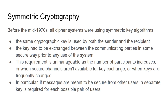All cryptography before the mid-1970s was symmetric in its nature. What we mean by symmetric when talking about cryptography is that the sender and the receiver of the message use the same key, and that key is sufficient to either encode or decode the message. As we've talked about in the past, exchanging those keys gets very difficult.